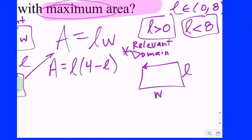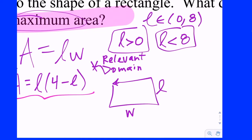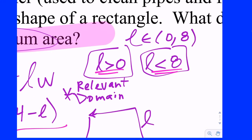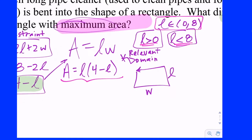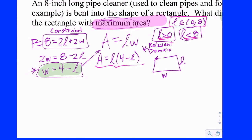At this point, it's a good time to think of a relevant domain, once you have it in terms of a single variable. What values of L make sense in general? Well, since we're talking about a length, it has to be positive. So L has to be bigger than zero, and as a safe upper bound, it has to be less than eight — there's no way it's going to be longer than eight because that's the full pipe cleaner. This puts you on an open interval because if the length is zero, there's no area; if the length is eight, there's no area. So somewhere in between zero and eight, there should be a place where we actually have an area.